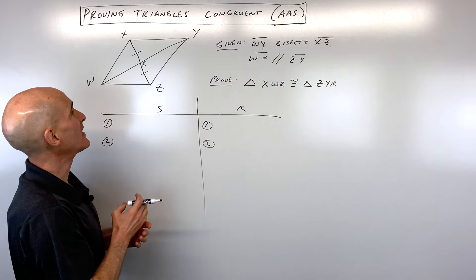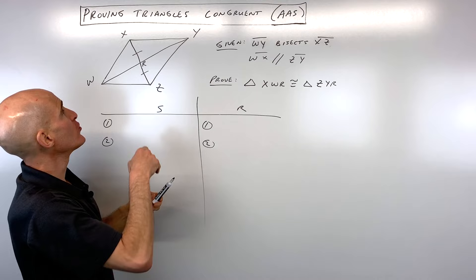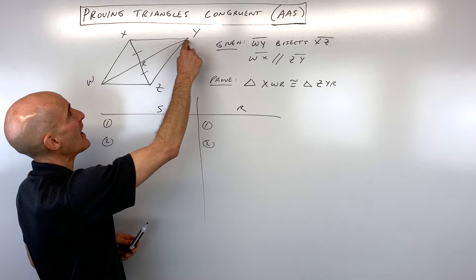Another thing that sometimes students get confused by is they'll say, okay, XR is congruent to ZR, and they'll also say WR is congruent to YR. That's only true if XZ is bisecting WY. But that's not what we have here. We have WY is the one that's doing the cutting in half. WY is cutting XZ in half. So XR is congruent to ZR.